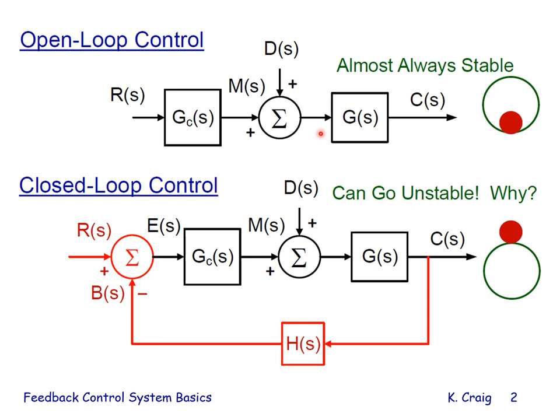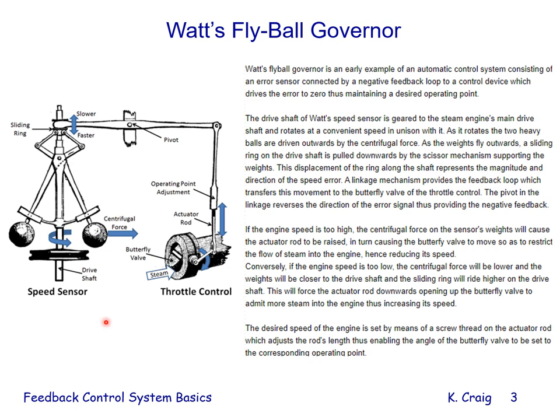Open-loop control systems are almost always stable, unless the plant is inherently unstable, like an inverted pendulum. With this brief introduction, let's explain why Watt's fly ball governor is an example of feedback control. It is an early example of an automatic feedback control system, consisting of an error sensor connected by a negative feedback loop to a control device which drives the error to zero, thus maintaining a desired operating point.